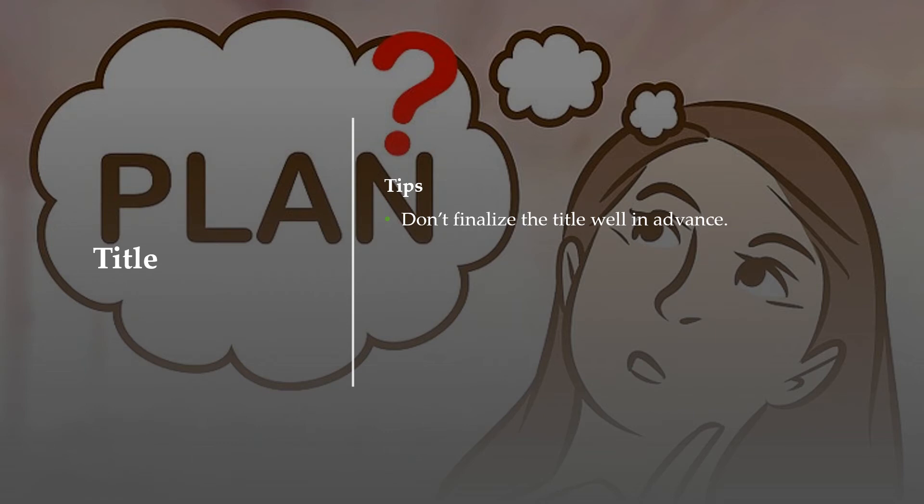But I feel that if it is not utmost essential, don't finalize the title well in advance. You will say I am saying different things altogether. No, it depends on the condition. If it is not utmost required, plan it at the last because your review paper outline may deviate a little bit when you are finalizing the thing. So your title must be representative of your paper from the beginning till the end.